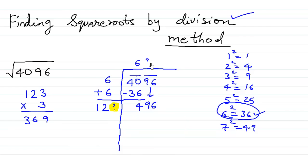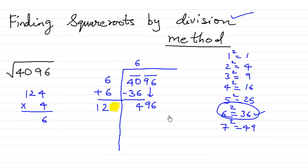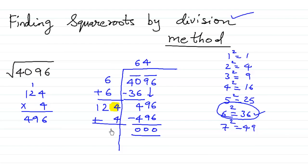We need a number such that the same number when multiplied gives us 496. Let us try 124: 124×4 — 4×4=16, 1 carry; 2×4=8, plus 1 is 9; 1×4=4. So 124×4=496. We subtract 496 from 496 to get a remainder of 0. We add 4: 4+4=8, giving us 124 below. So the square root of 4096 is 64.